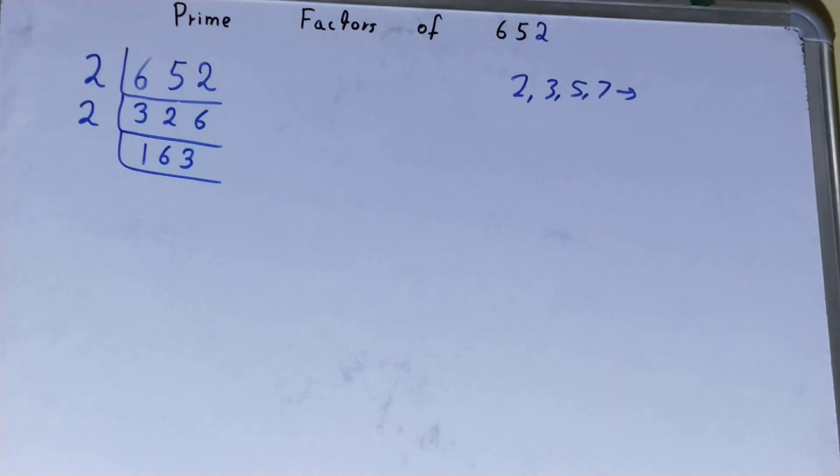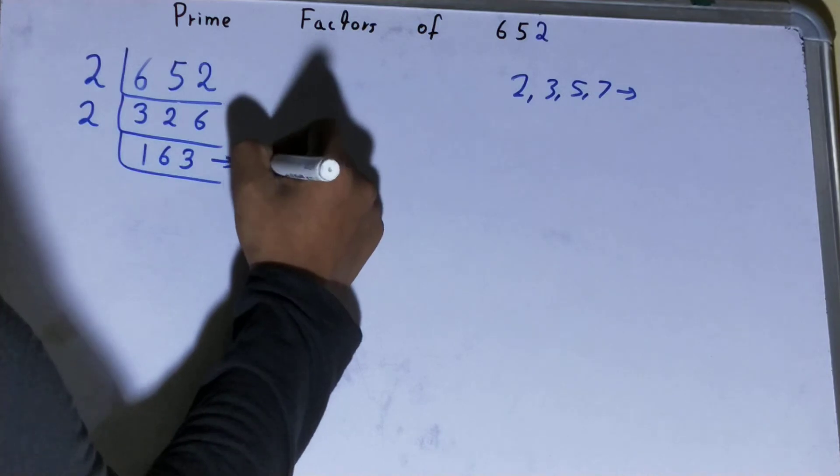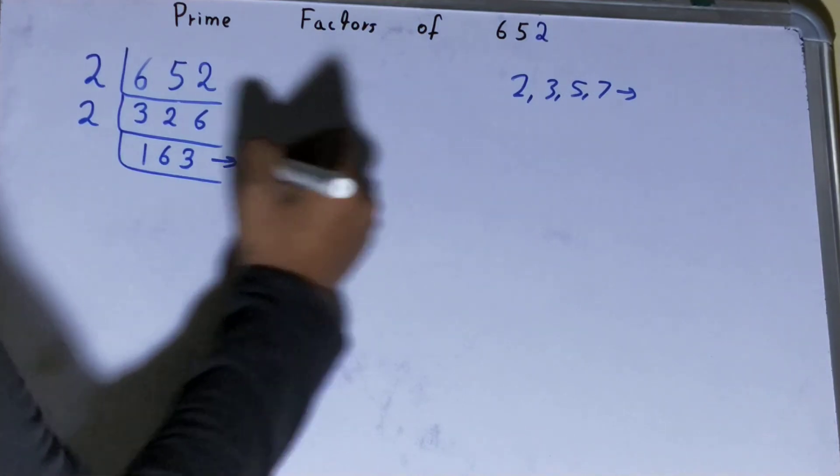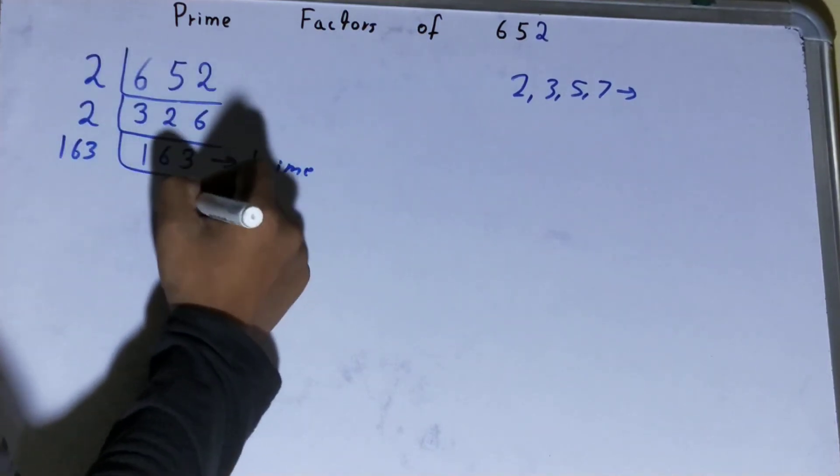Now is this 163 further divisible by 2? The answer is no. It is an odd number, and it is also a prime number. So 163 is only divisible by itself. And when you will do so, you will be left with 1.